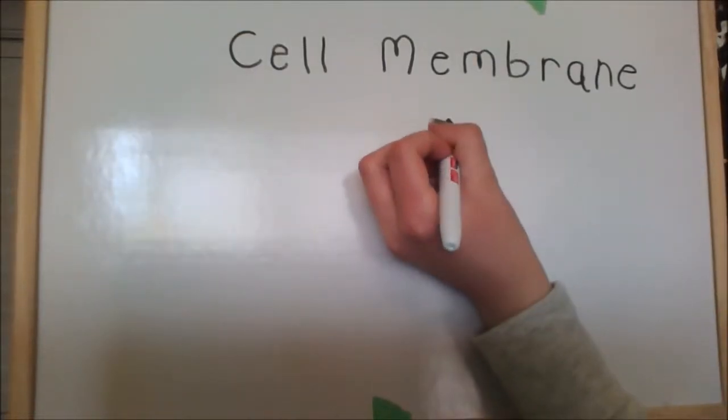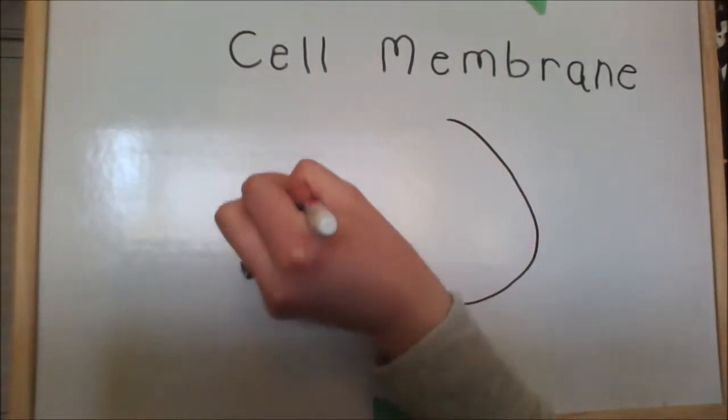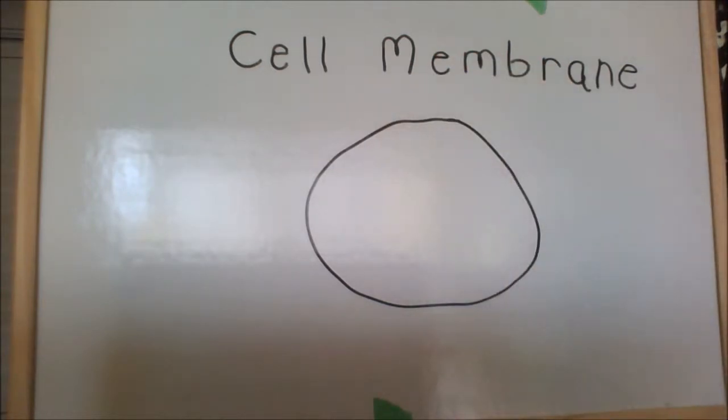Draw my animal cell. Cell membrane, the thin layer of protein and fat that surrounds the cell. The cell membrane allows some substances to pass into the cell and blocks others.